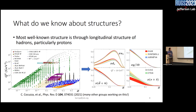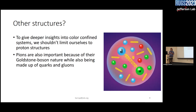From these data you can extract PDFs — I show an example from the JAM paper by Cocuzza et al., with PDFs shown in red. Many groups are dedicated to this effort: NNPDF, ABMP, CJ, CT, MMHT — all working on longitudinal structure of the proton. But as I mentioned, it's important to look at other structures. If we want a deeper insight into color-confined systems, we shouldn't just limit ourselves to protons.